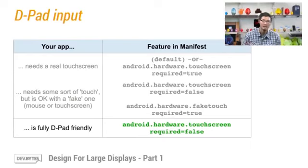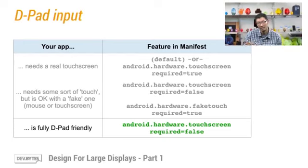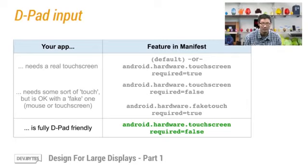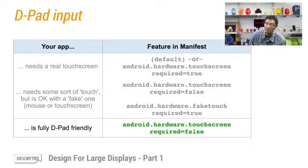To illustrate the relationships between these three input methods, we've added a D-pad entry to this table. If your app is fully D-pad friendly — meaning you can completely navigate throughout your app using just the conventional D-pad without any gesture control — then you can simply declare no touch, or touch equals false, in your Android manifest, and you may not need to consider fake touch. Going back to the previous example, Angry Birds is actually a good candidate for using this new fake touch definition.